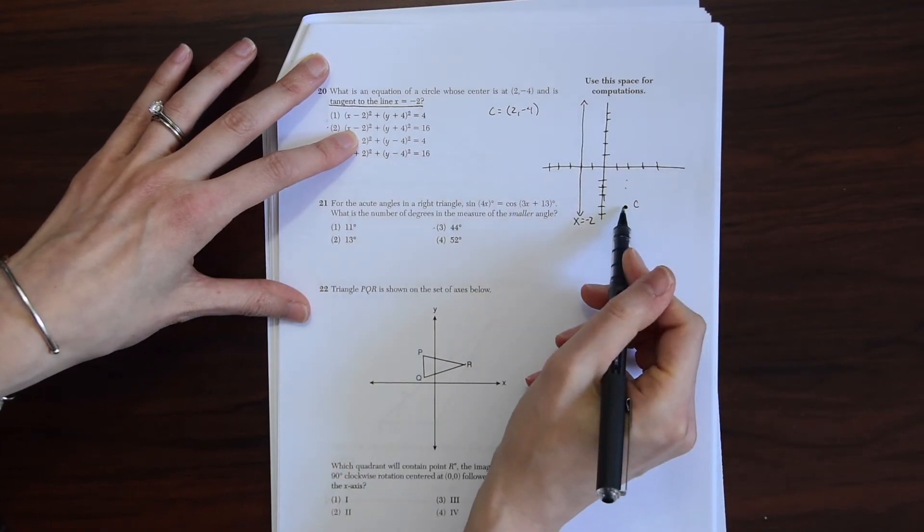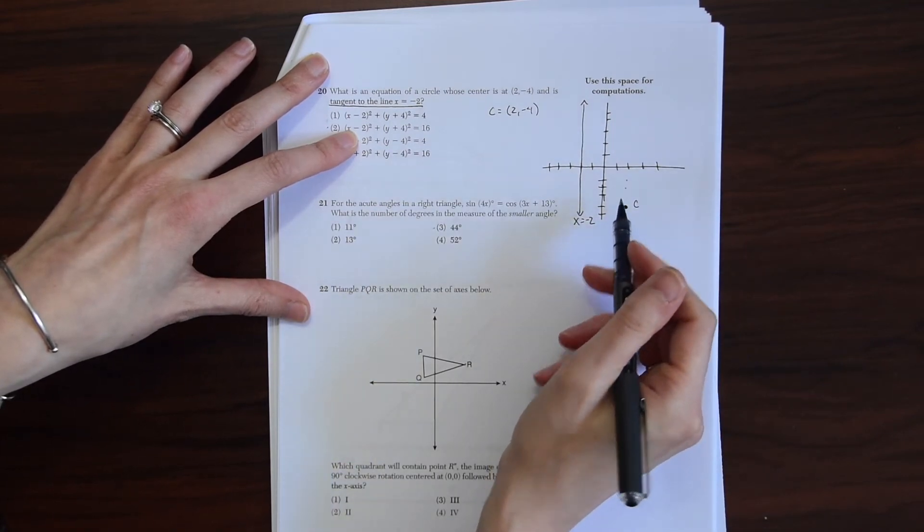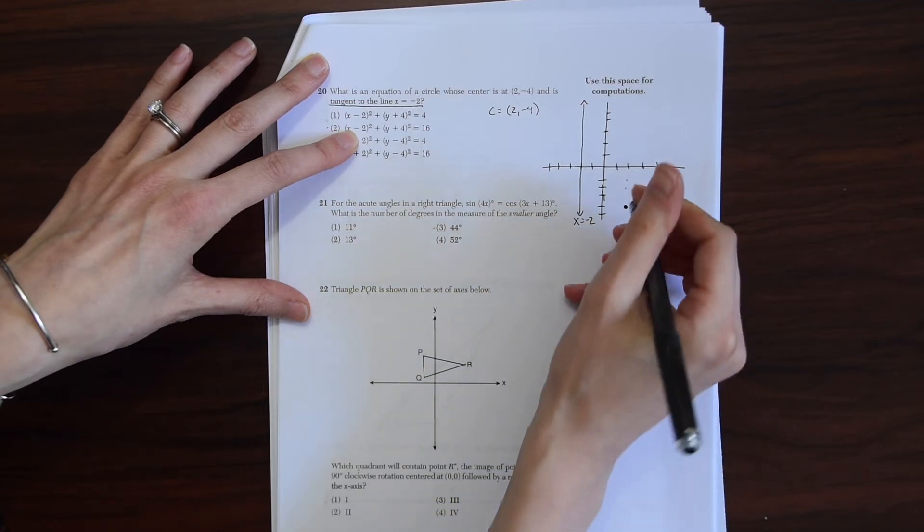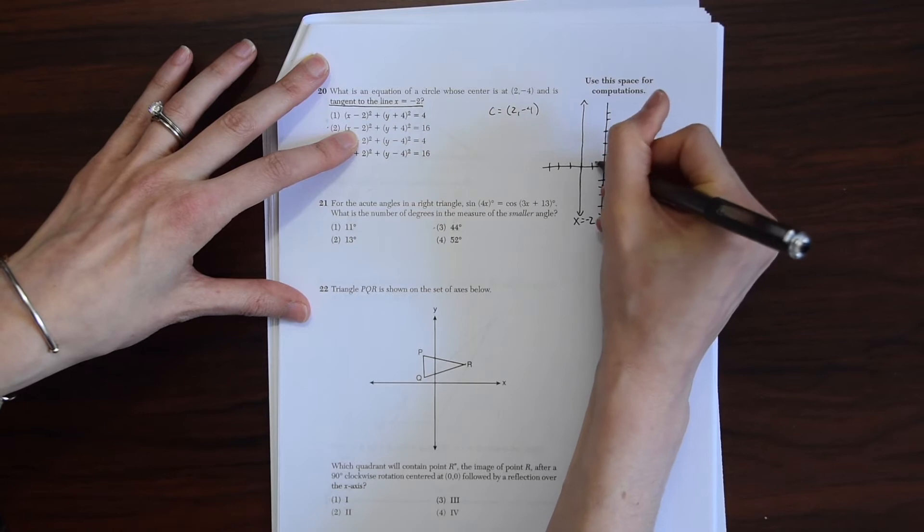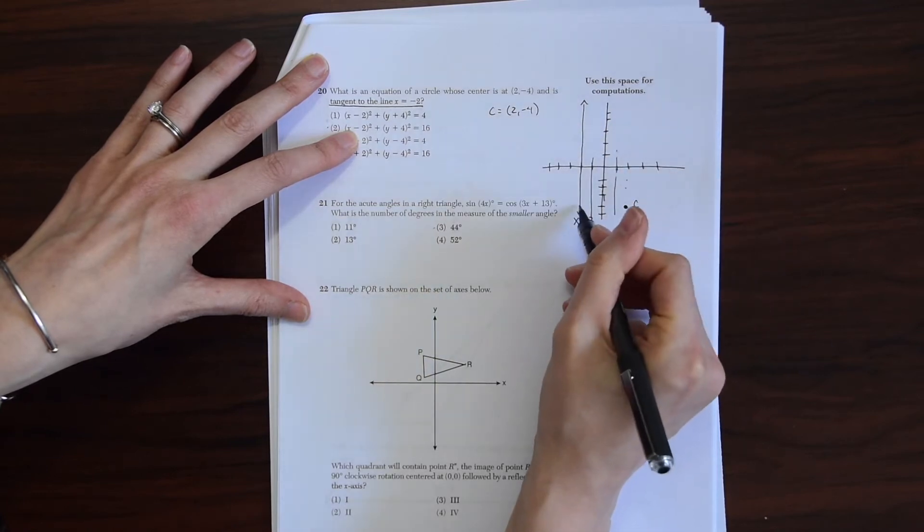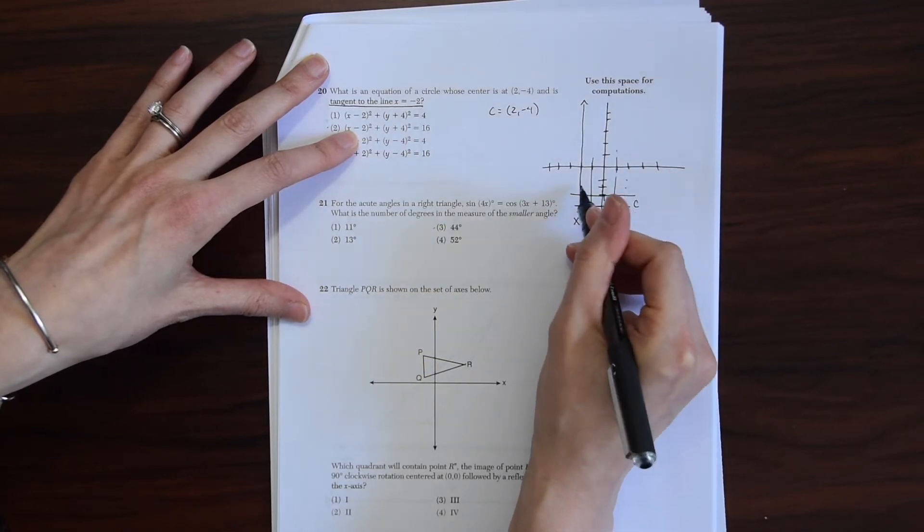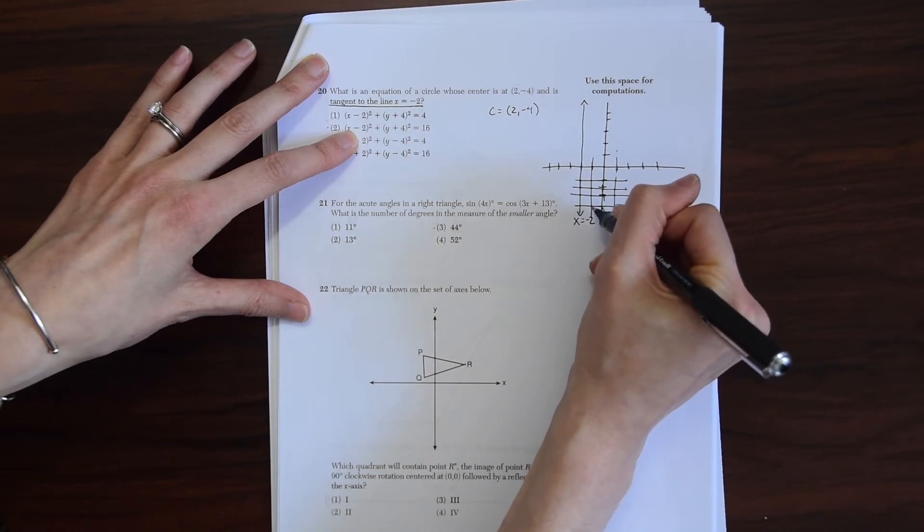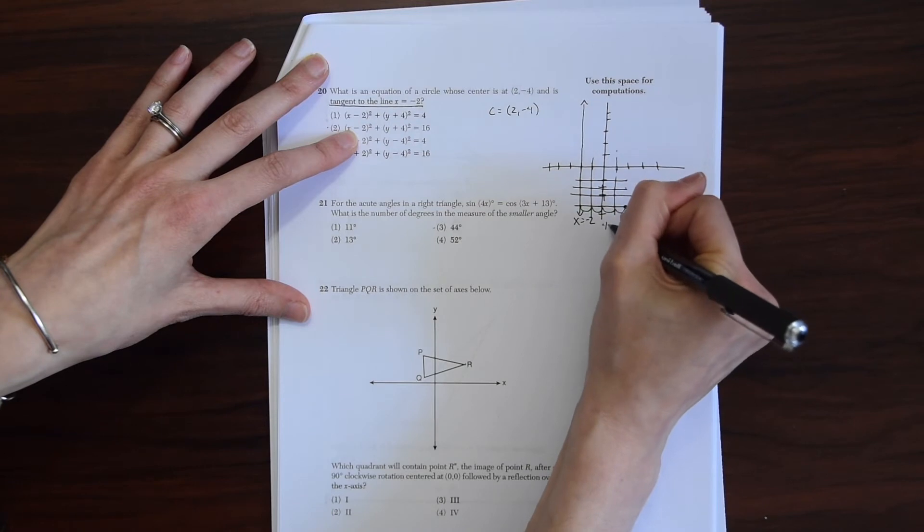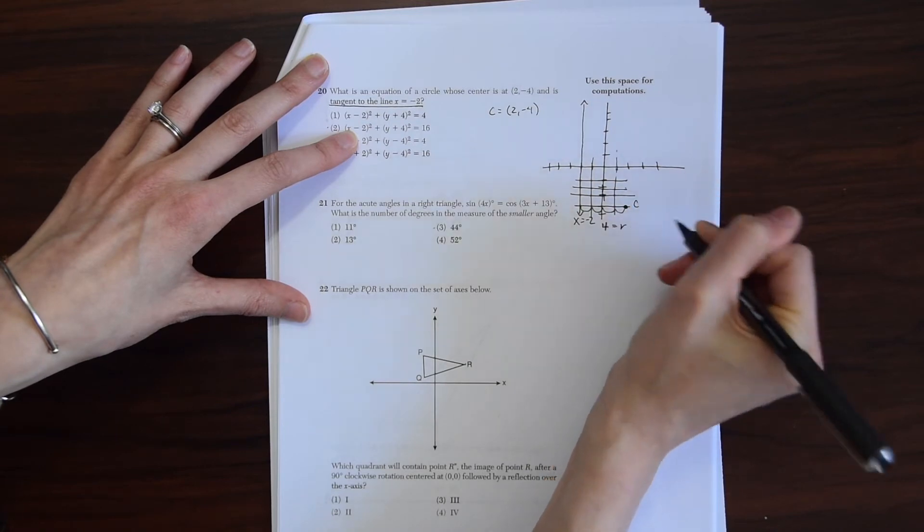And we know that the radius is always halfway across a circle. So let's just draw in more lines here so you can see this more clearly. So you can see that the radius is 1, 2, 3, 4 units away. So the radius is equal to 4.